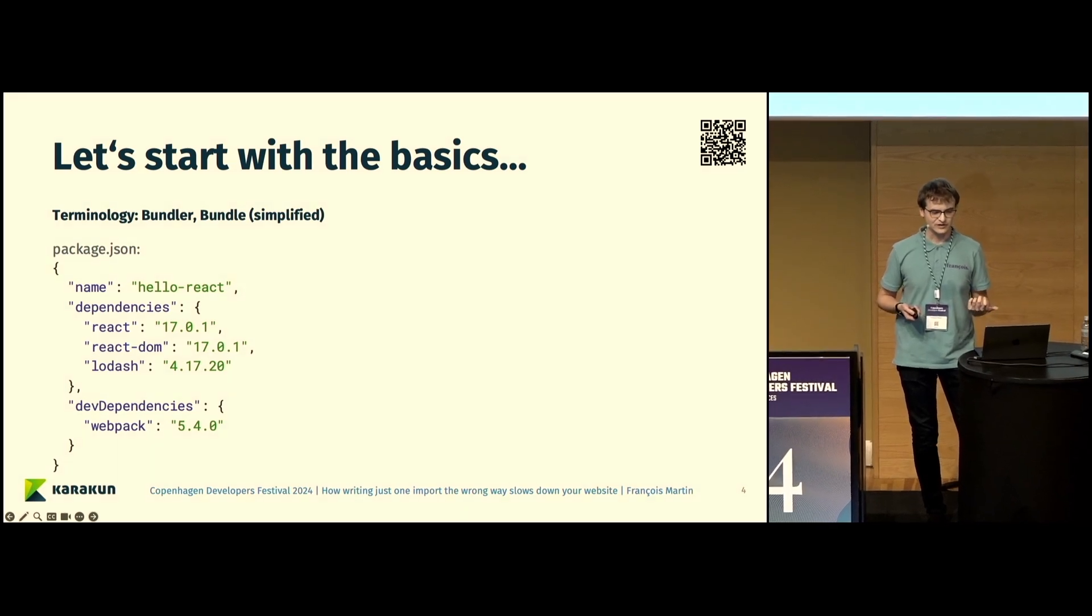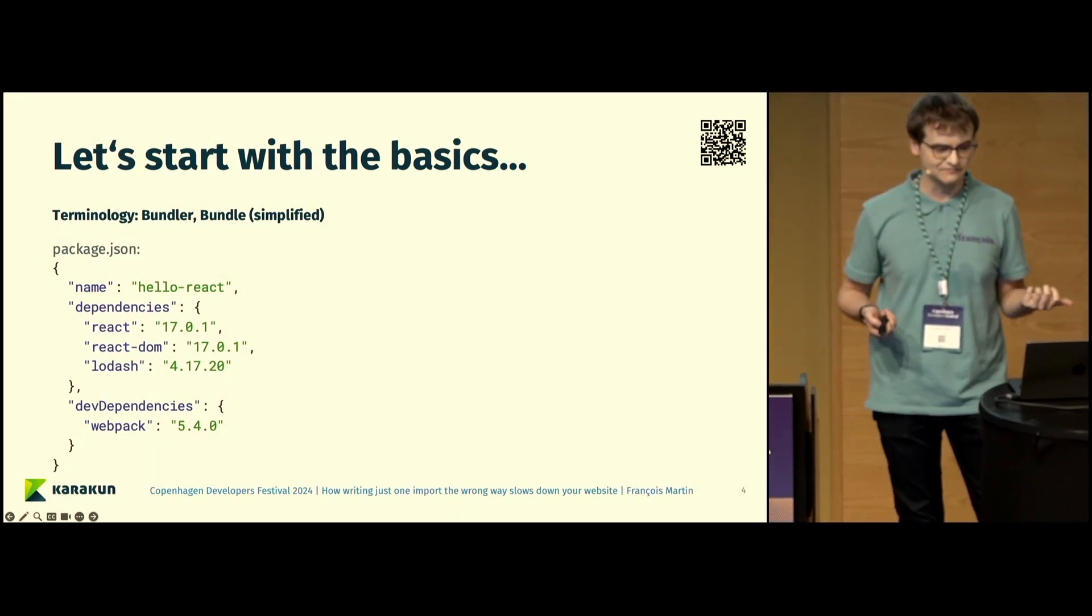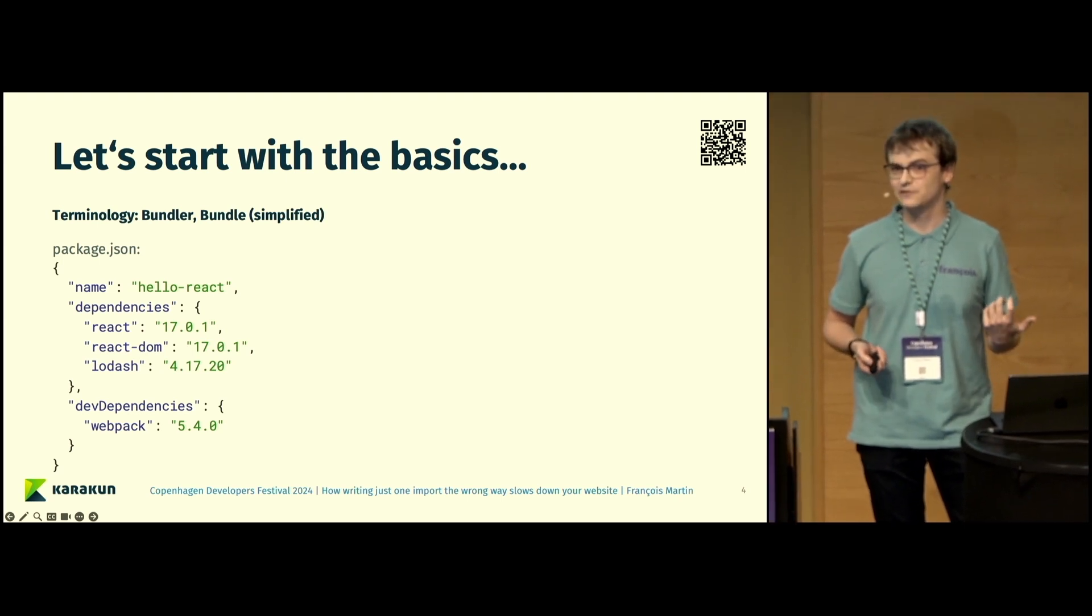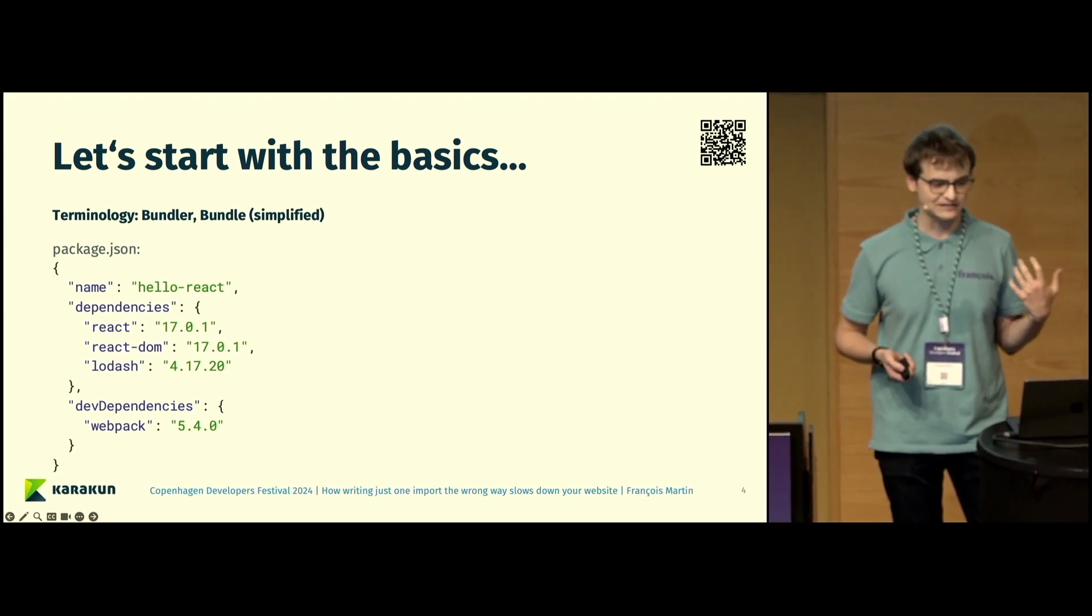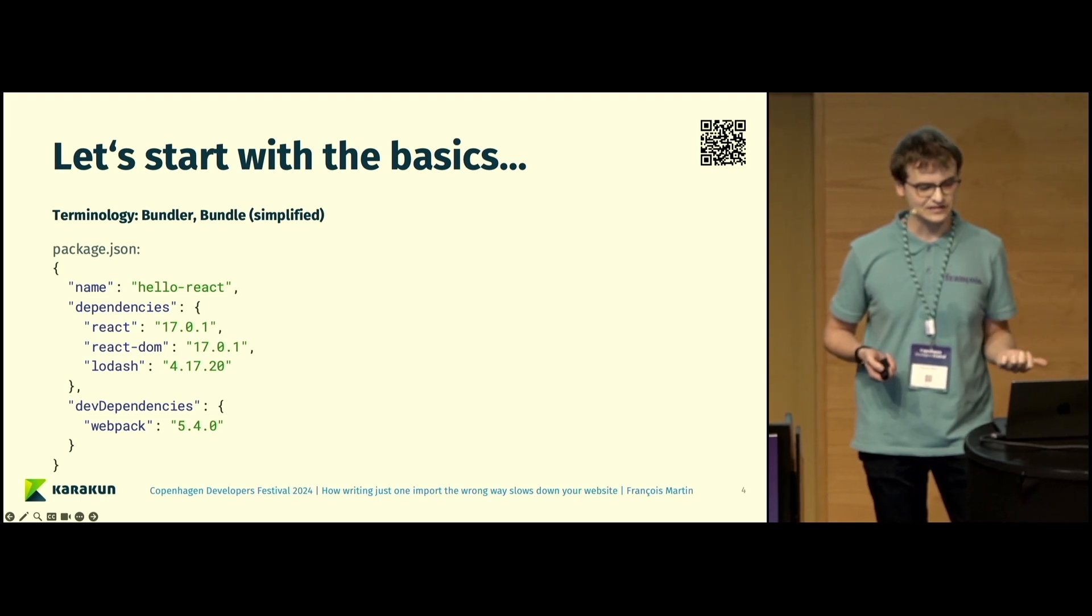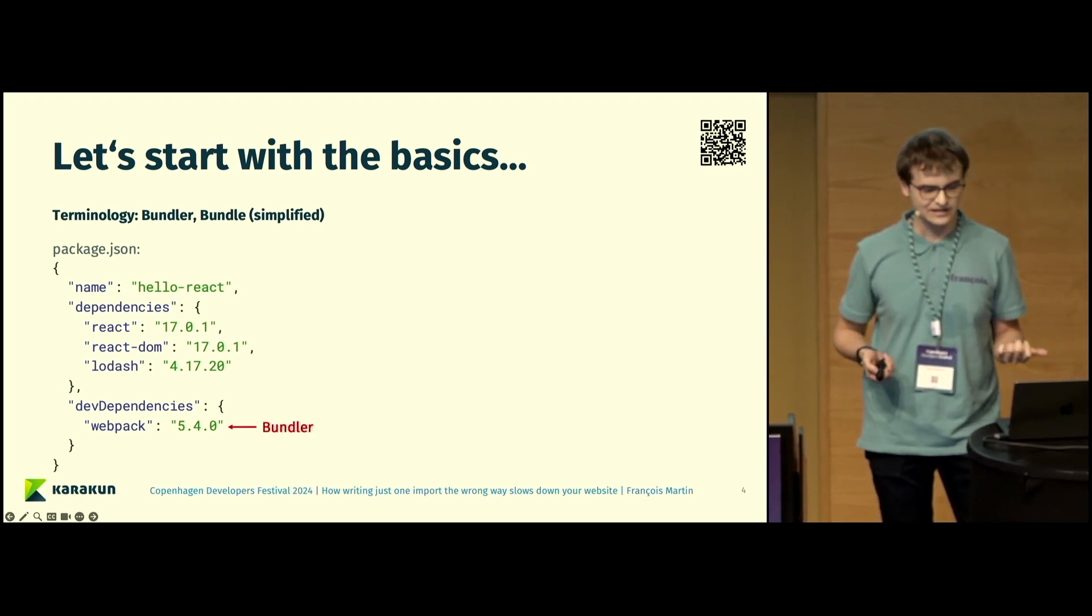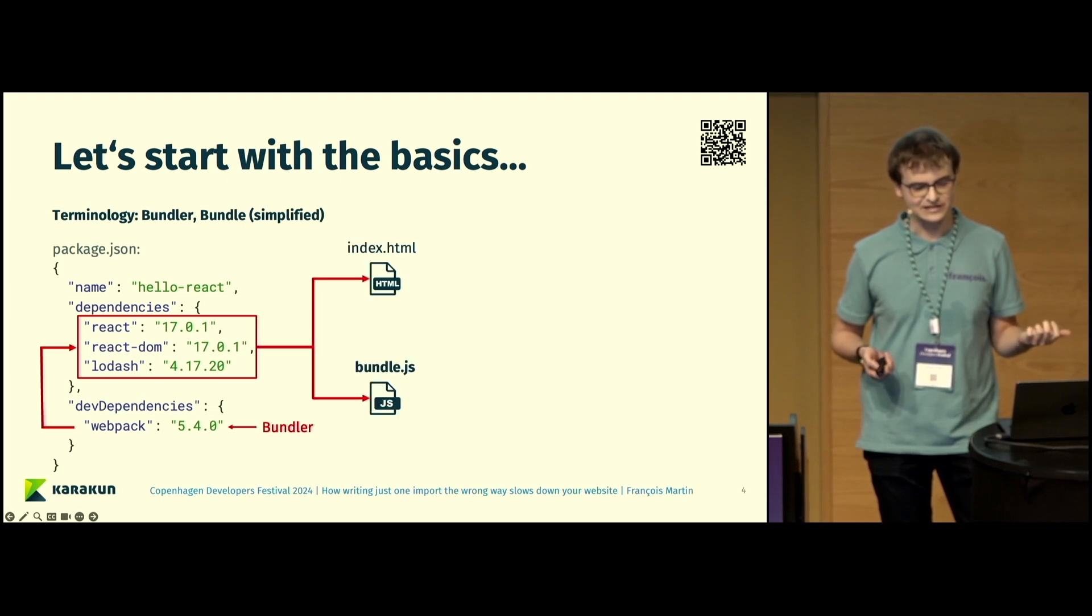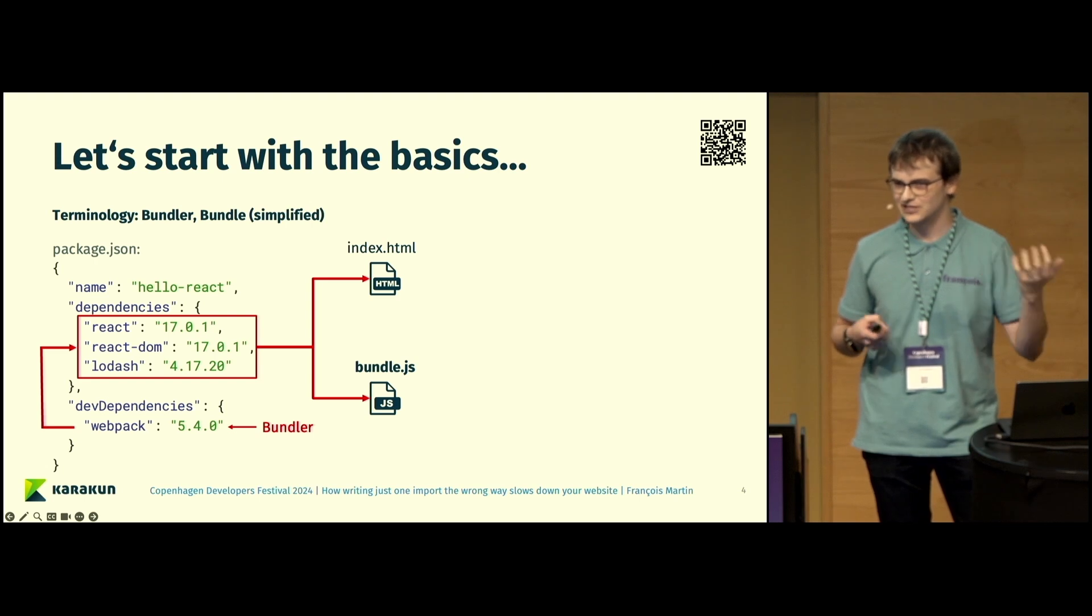When you have a web application, for example a React application as you can see here, if you look at the package.json file, it will look something just like this. You can see we have some dependencies, some dev dependencies, and then webpack is here the bundler that we have. The bundler essentially takes all of those dependencies and transforms them into two files. It is, on one hand, an index.html which loads those dependencies. And the dependencies are bundled up together, hence the name bundler, into a bundle file called bundle.js for example.